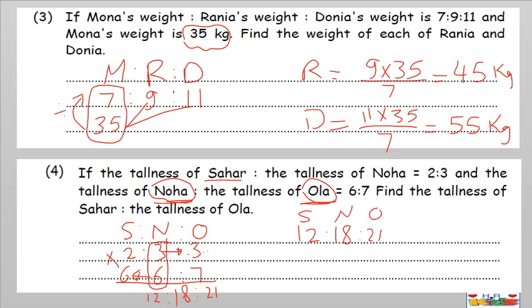We can simplify — divide all by 3: the first becomes 4, 18 becomes 6, and 21 becomes 7. The question asked for the ratio between Sahar and Ula. So Sahar is 4 and Ula is 7 — and that is the final answer.